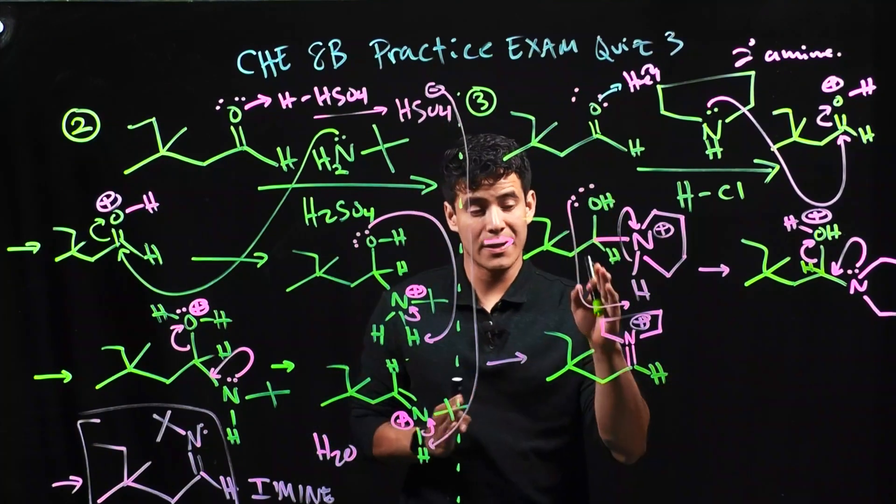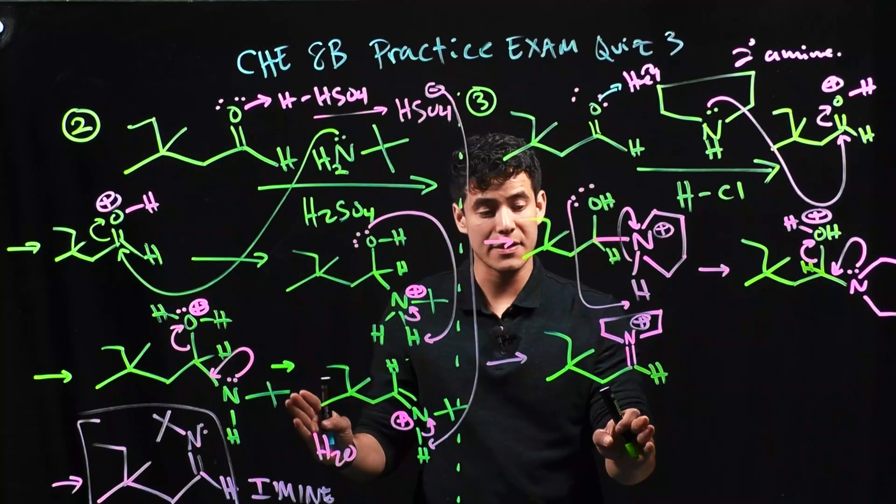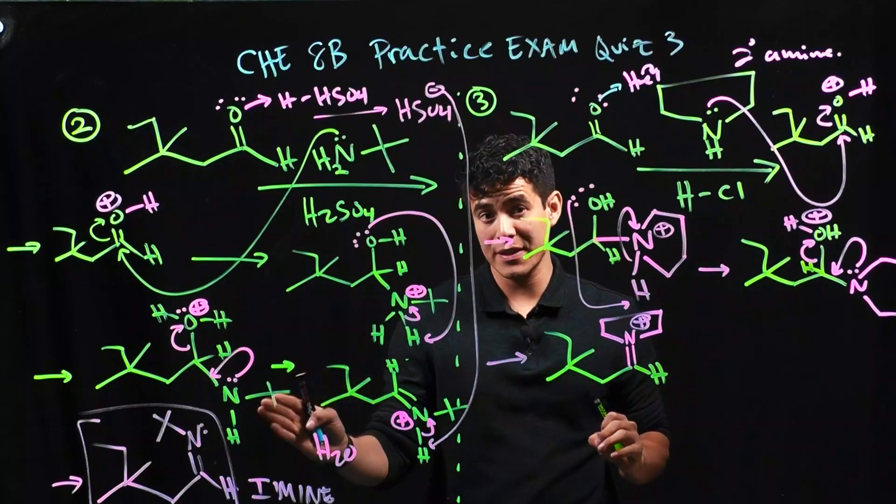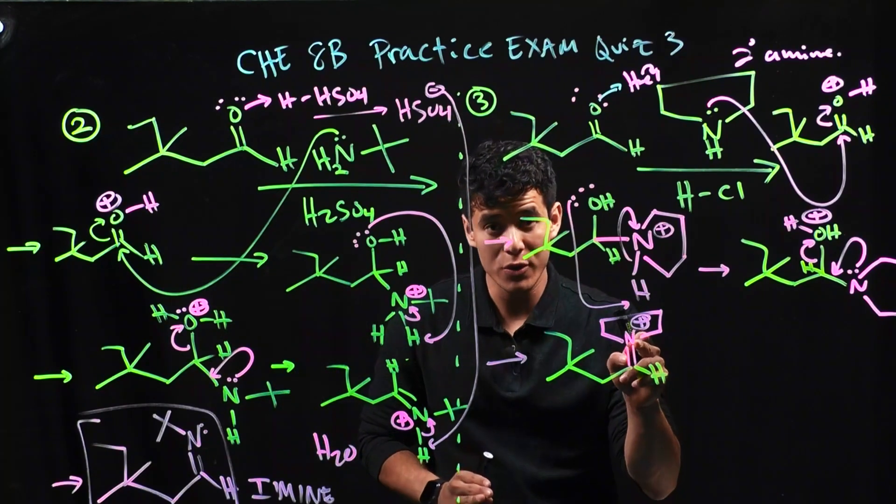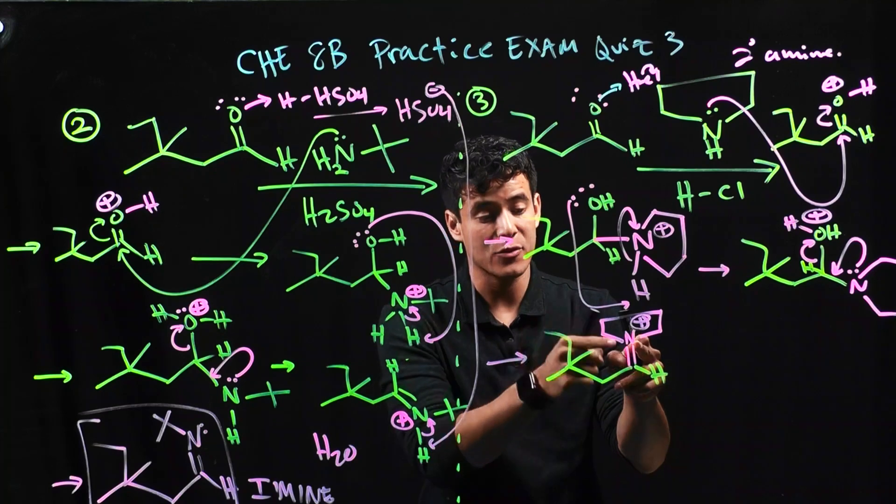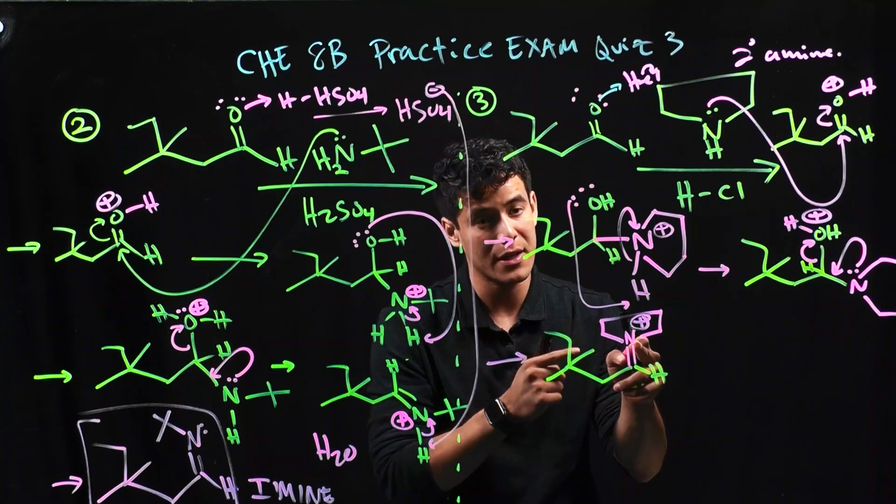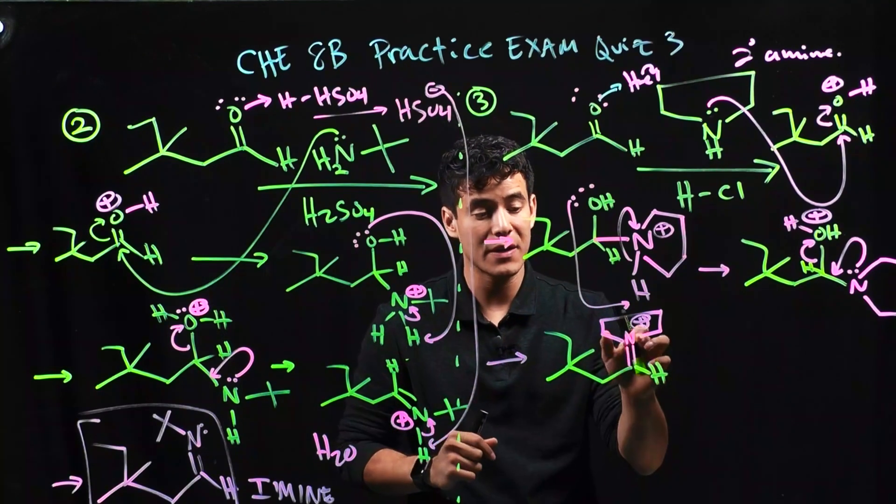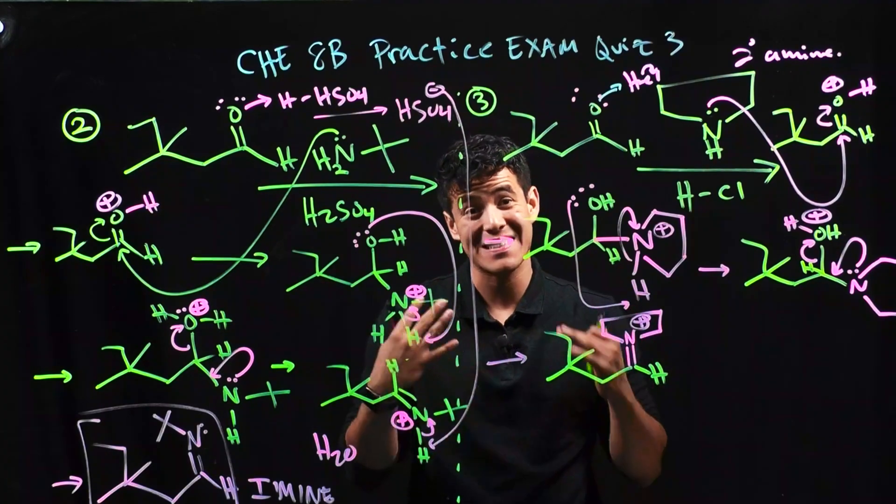The only difference between this step and our previous step is that in the previous mechanism, we had a proton that we could snag from our nitrogen and reform the lone pair on the nitrogen. But we don't have that here. The nitrogen doesn't have anything else to give up.